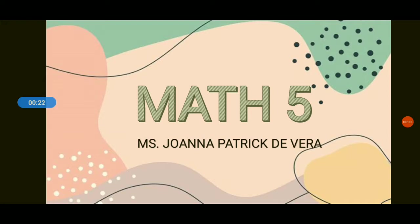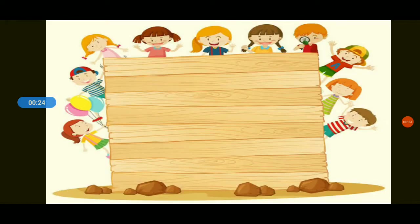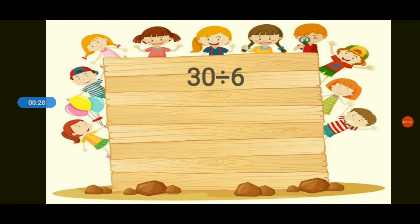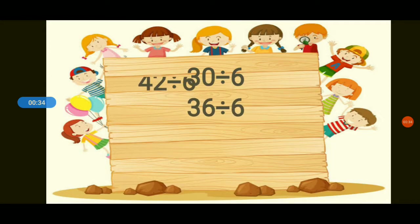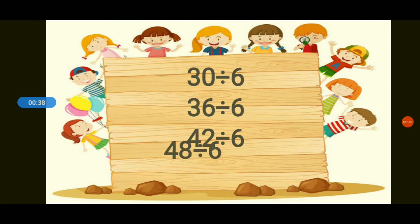So now before anything else, let us first have this drill. Let us have 30 divided by 6, 36 divided by 6, 42 divided by 6, and 48 divided by 6. 30 divided by 6 equals 5, 36 divided by 6 equals 6, 42 divided by 6 equals 7, and 48 divided by 6 equals 8.